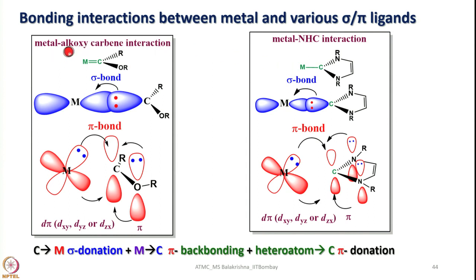And then in metal alkoxy carbene interaction very similar this carbon lone pair goes to the metal through sigma bonding and once again metal gives electrons to pi star of carbon through backbonding and once again here oxygen lone pair also competes for this one. As a result these alkoxy carbene and n-heterocyclic carbene are relatively poor pi acceptors compared to carbon monoxide and phosphines. I hope it is clear now through orbitals also I have shown how they interact while doing backbonding or in sigma bonding.